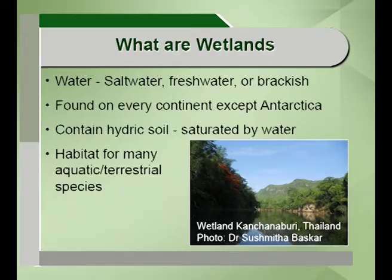The peatlands comprise more than 50 percent of the world's wetlands. They contain hydric soils or soils that are saturated by water, and they are also habitats for many aquatic and terrestrial species. Climate, topography, hydrology and chemistry are significant factors which determine the soil development and which kind of flora and fauna can thrive in the wetland ecosystem.